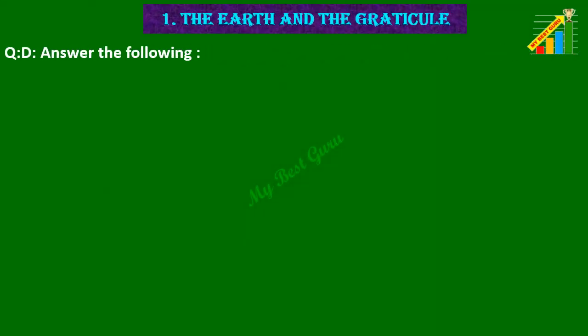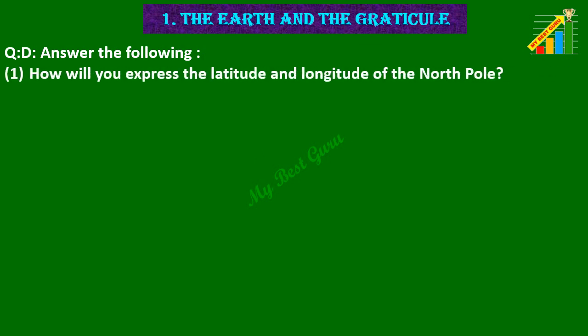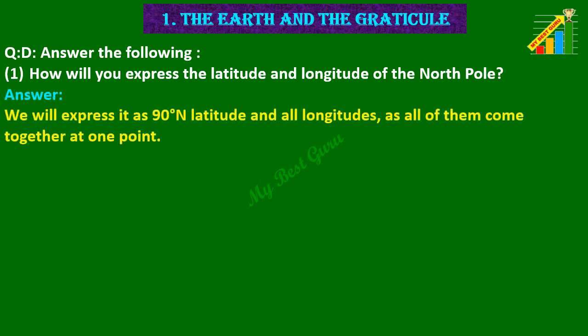Question D. Answer the following. 1. How will you express the latitude and longitude of the North Pole? Answer: We will express it as 90 degree North latitude and all longitudes, as all of them come together at one point.